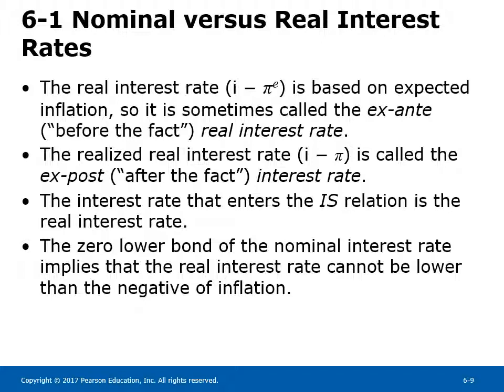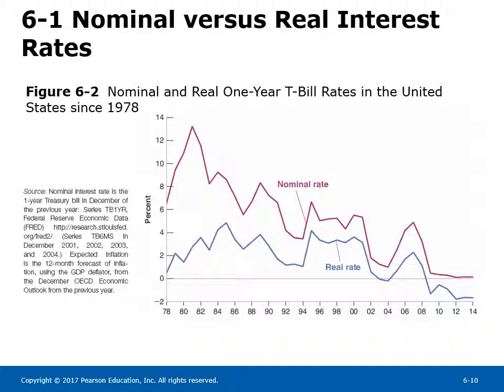The real interest rate is based on expected inflation, so it is sometimes called the ex-ante (before the fact) real interest rate. The realized real interest rate is called the ex-post (after the fact) interest rate. The interest rate that enters the IS relation is the real interest rate. The zero lower bound of the nominal interest rate implies that the real interest rate cannot be lower than the negative of inflation. Figure 6-2 shows nominal and real one-year T-bill rates in the US since 1978. The nominal interest rate has declined considerably since the early 1980s, but because expected inflation has declined as well, the real rate has declined much less than the nominal rate.